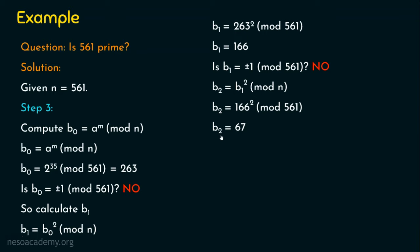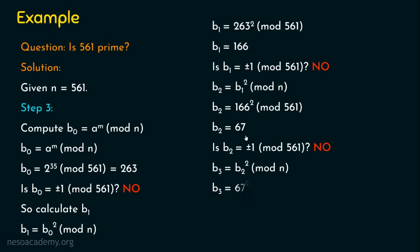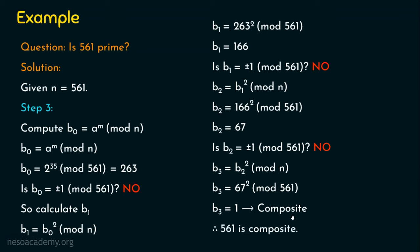b2 equals b1 squared mod n. We substitute and evaluate to get b2 equals 67. Since b2 is neither plus 1 nor minus 1, we compute b3 equals b2 squared mod n, which is 67 squared mod 561. Evaluating this gives plus 1. Since we get plus 1, the number 561 is a composite number.